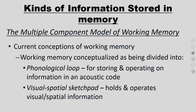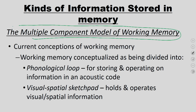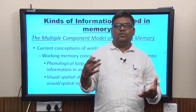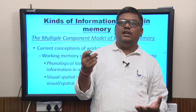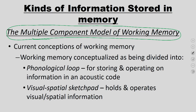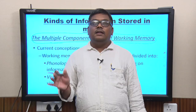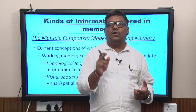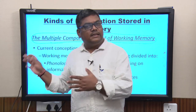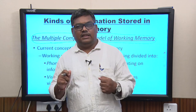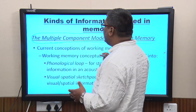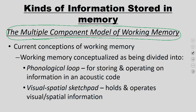What kinds of information are stored in working memory? The multiple component model of working memory addresses this. The short-term store has different representations: the icon for visual information and the echo for auditory information. Atkinson and Shiffren believed all information entering the short-term store is stored in one basic format — the phonological (auditory) format — but that is where Alan Baddeley and the concept of working memory differs.